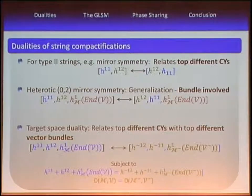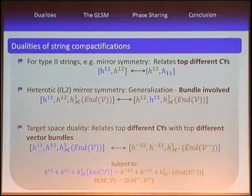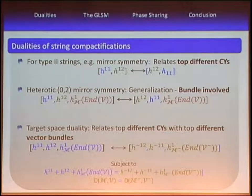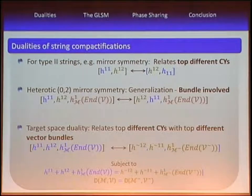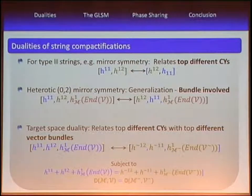What dualities do we know? For type II Calabi-Yau compactifications there is mirror symmetry, which relates a Calabi-Yau manifold to a topologically distinct one by exchanging the Hodge numbers, so the number of deformations stays the same on both sides. There is a generalization to heterotic compactifications involving the bundle, called (0,2) mirror symmetry, where again the Hodge numbers exchange and the mirror manifold gets a new bundle with the same number of bundle deformations.